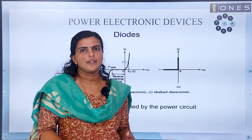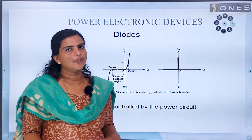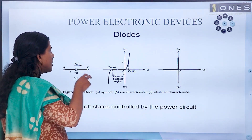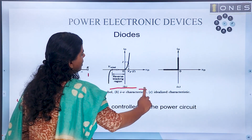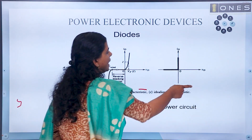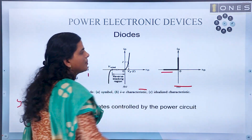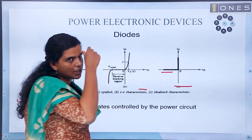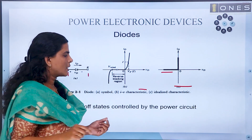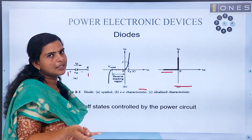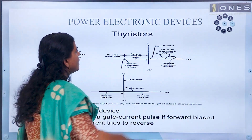Let's see what the power electronic devices are — basically we call them power electronic switches. The first is the diode, called a power diode in high power applications. A diode has an anode and a cathode. In the practical and ideal characteristics, the diode passes current in the positive direction and blocks reverse voltage. The on-off is controlled by the power circuit — there are no gate terminals. It is a two-terminal device operating at a higher power rating.